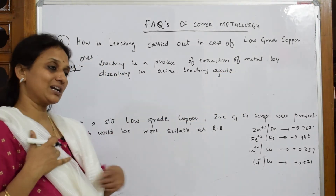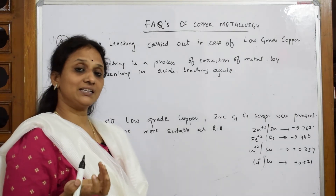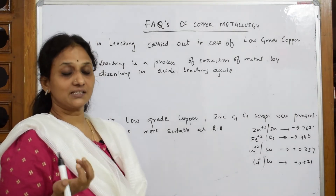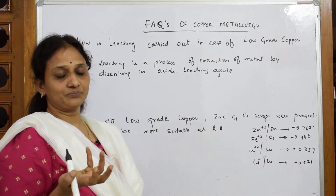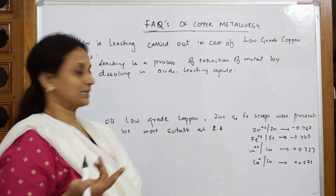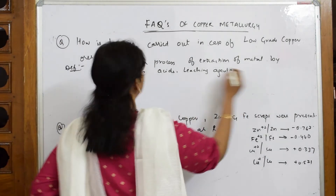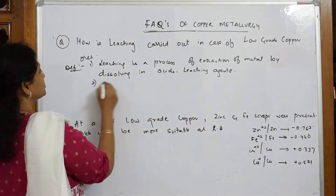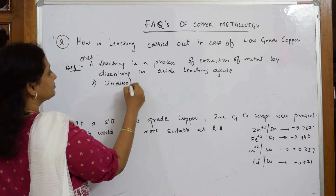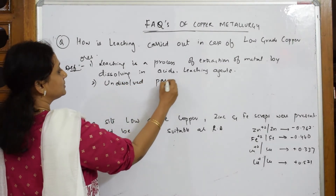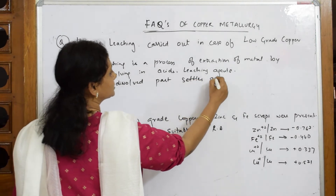After you leach, what will happen to the impurities? The impurities are going to settle in the form of sludge. That is the undissolved part of the ore — the impurities of the particular metal. The undissolved part settles as sludge.